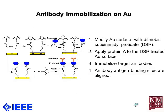After calibrating the refractive index sensitivity, the next step is to immobilize malaria antibodies onto our sensor. This schematic diagram shows the immobilization steps. The first step is to modify the gold surface with DSP. After modifying the gold surface with DSP, we apply Protein A. After applying Protein A, we immobilize target antibodies on Protein A. As shown in the schematic diagram, the active binding sites are well aligned.